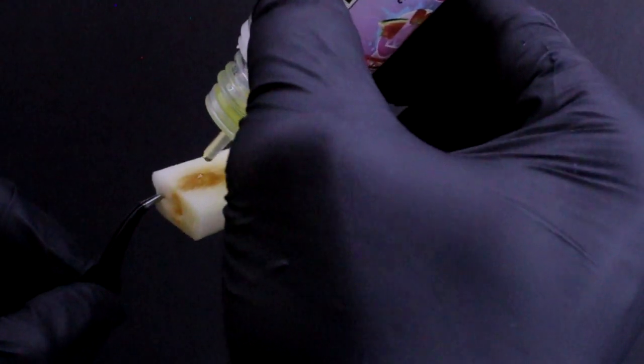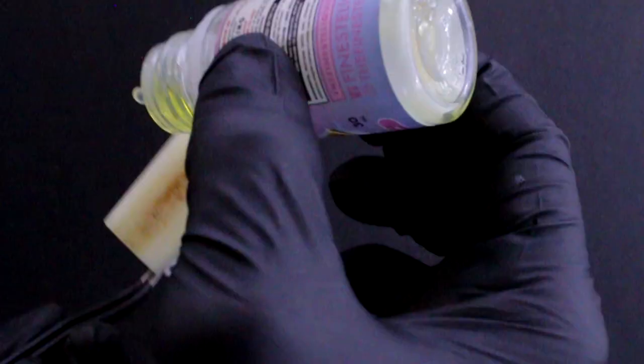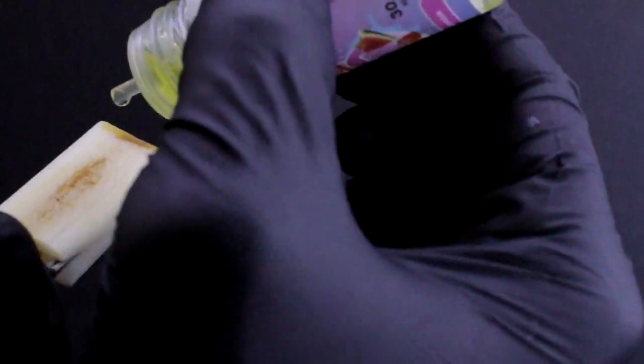Now you're just going to want to take your juice of choice, go to the coil, and simply go right down the center, dripping the juice as you go. Flip it over. Do the same thing.